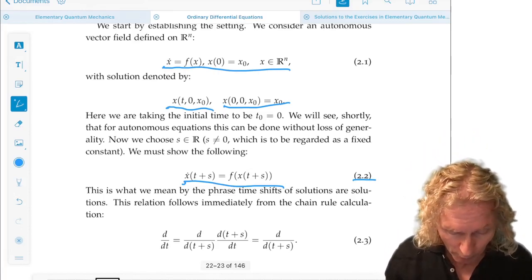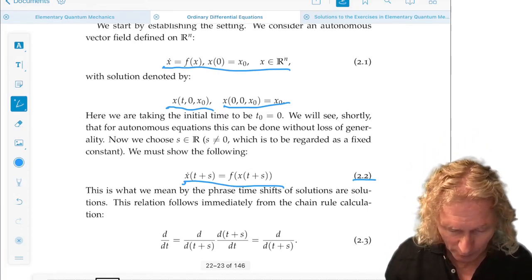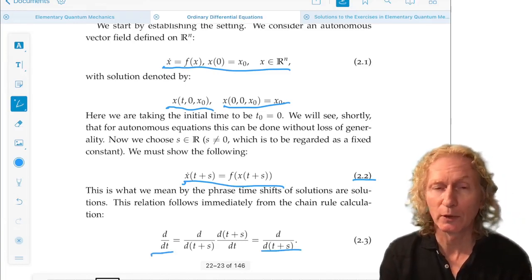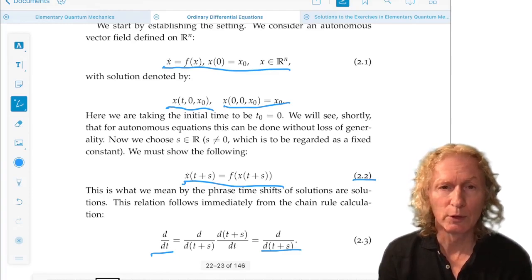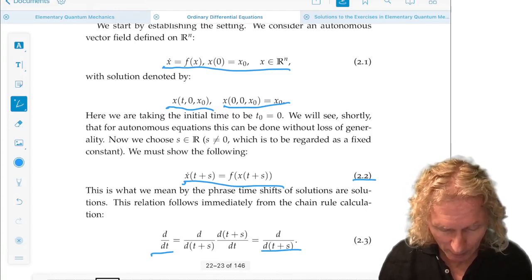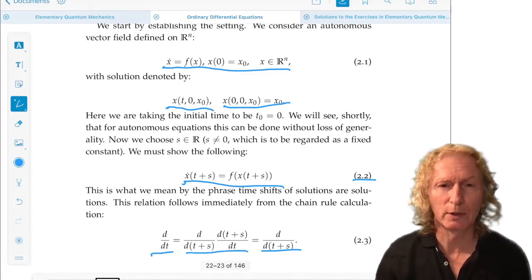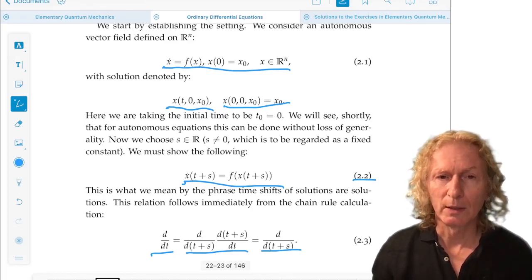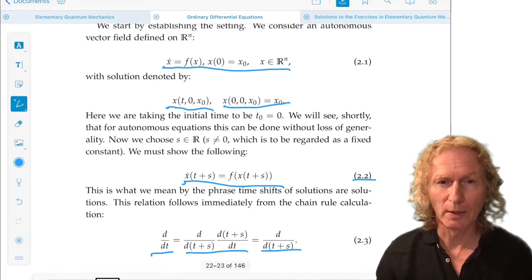But it would be true if, looking at 2.3, if d by dt were equal to d by d(t plus s). Because then we would just be essentially changing the variable of time in equation 2.2. And by the chain rule, we see that the left-hand side d by dt and the right-hand side d by d(t plus s) are equal.